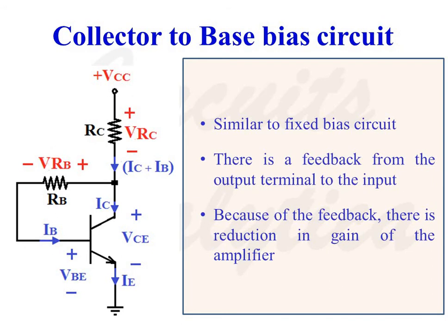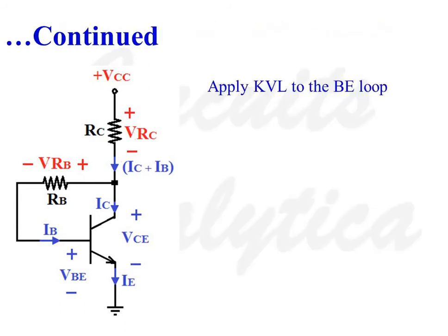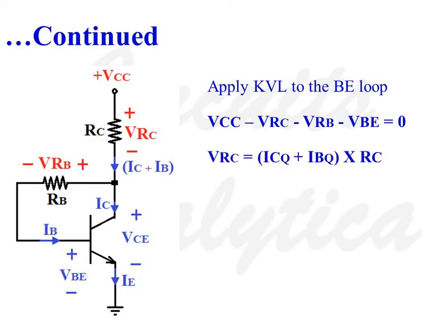Next, let us consider the collector-to-base bias circuit. This biasing circuit is similar to the fixed biasing circuit. The difference is that there is a feedback from the output terminal to the input terminal. Because of this feedback, there is a reduction in gain of the amplifier. Applying KVL, we get: VCC minus VRC minus VRB minus VBE equals 0. VRC equals (ICQ plus IBQ) times RC, and VRB equals IBQ times RB.